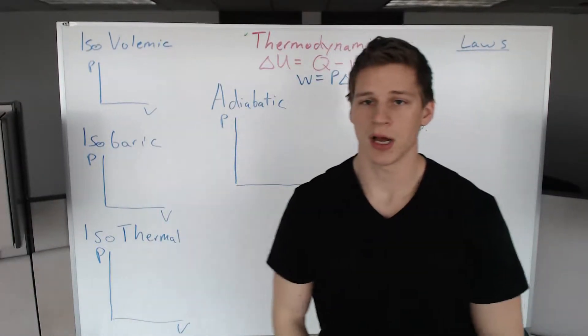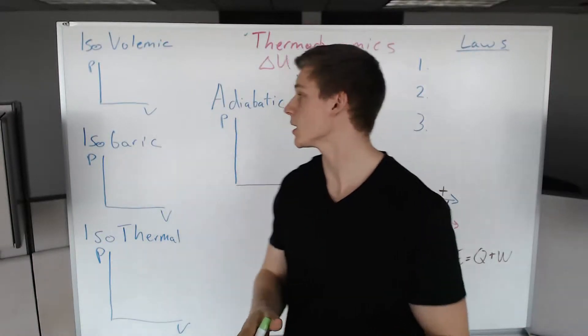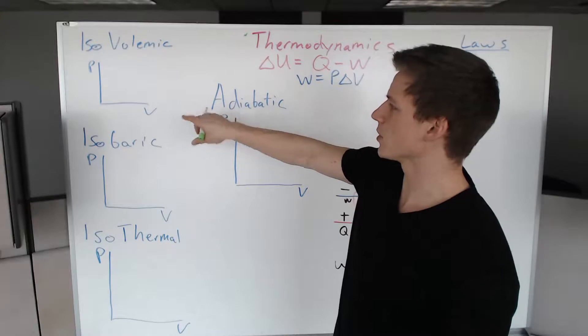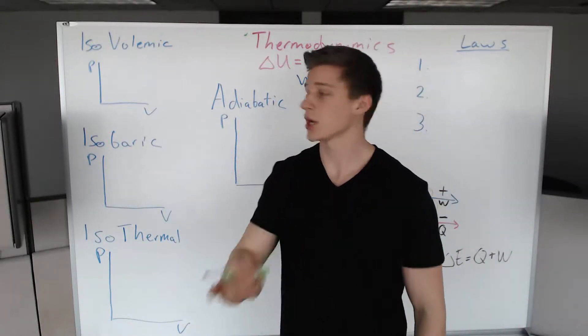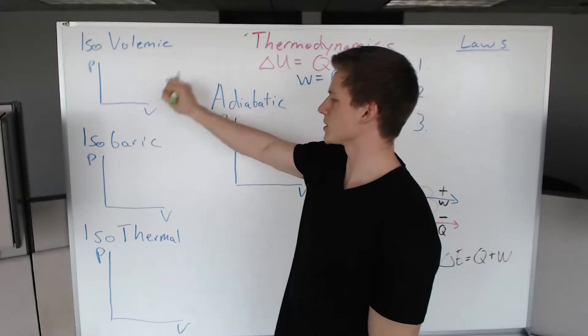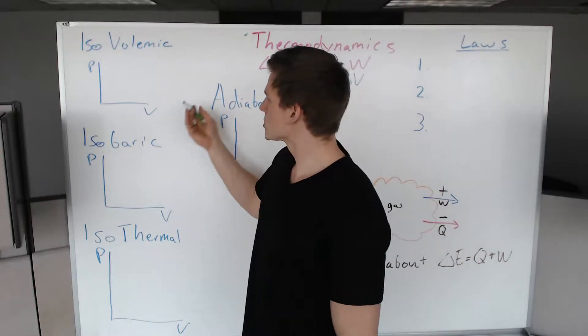Let's get started. We have pressure versus volume, and our goal is to figure out one line change that's going to be a process that's either isovolumetric, isobaric, isothermal, or adiabatic.